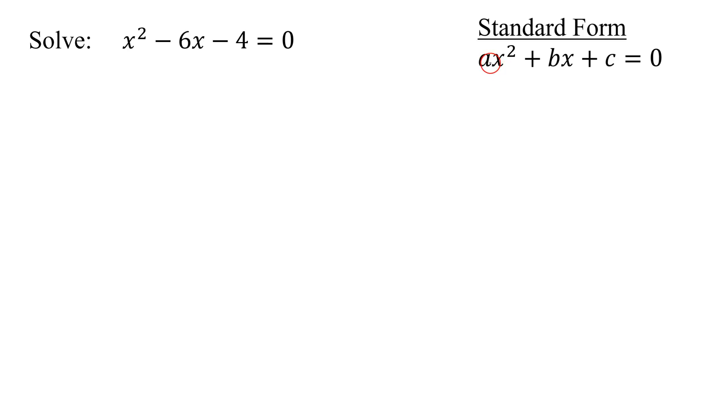Now to solve it, whether we factor or use the quadratic formula, I need to know the values for a, b, and c. So a is the coefficient of the x squared term. So in my case, what number are we too efficient to write in front of that x squared? It's a 1. b is the coefficient of the x term. So b is negative 6. And c is the constant term. It is negative 4.